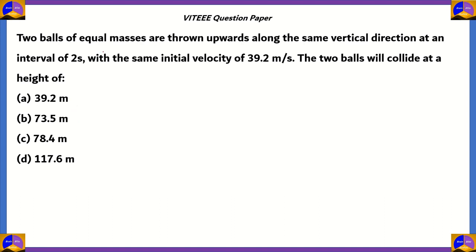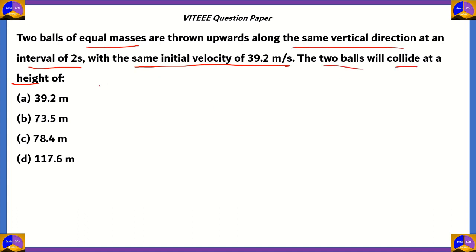The two balls are of equal masses, so mass does not play a role. They're thrown upwards along the same direction at an interval of two seconds. So if the first ball was sent at the third second, then the second ball will be sent at the fifth second. That means the time period of the first ball will be t plus two seconds if the time period of the second ball is t seconds. Both balls have the same initial velocity of 39.2 meters per second. We need to find the height at which the two balls collide.